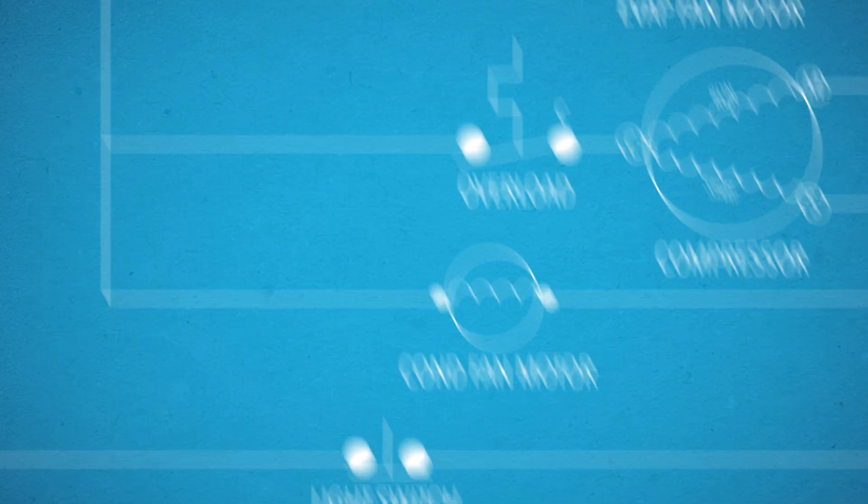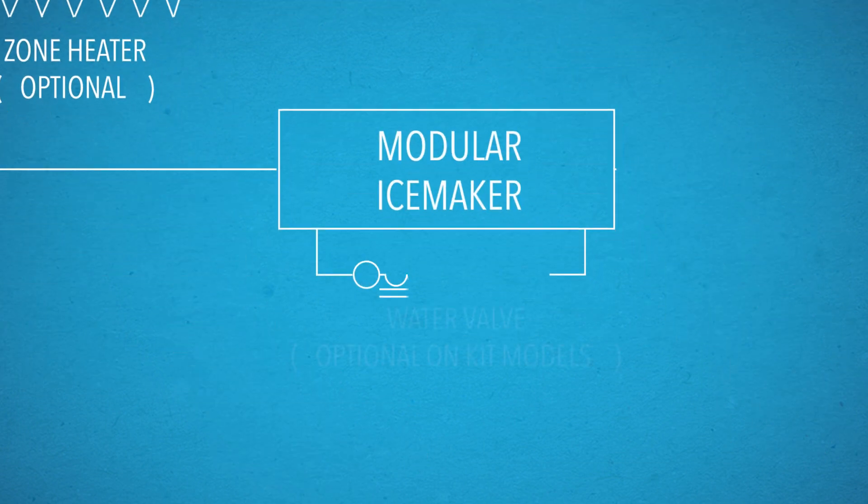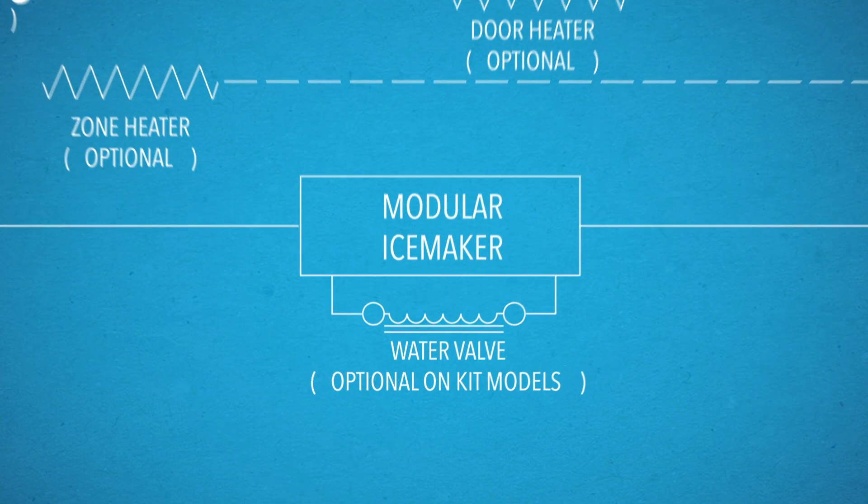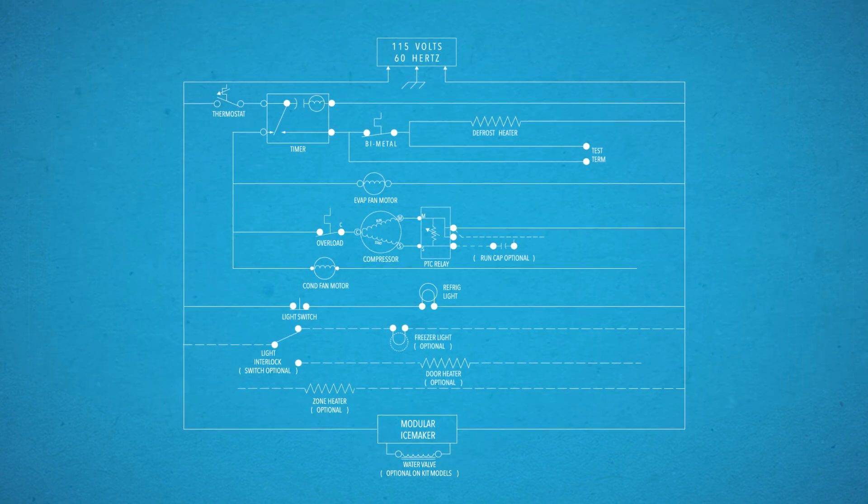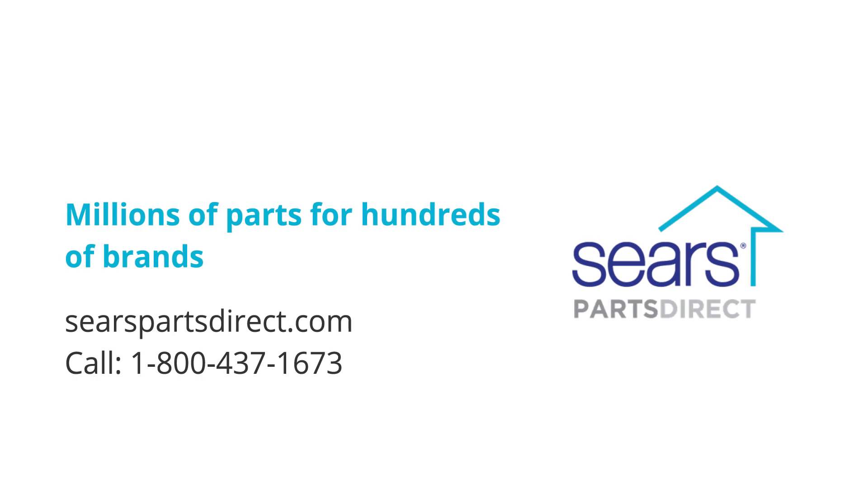If the ice maker doesn't fill with water, you may need to check the water valve. Understanding the symbols and layout of a wiring schematic will help you test each component so that you can buy the right part to fix the problem. For more DIY help, head to searspartsdirect.com